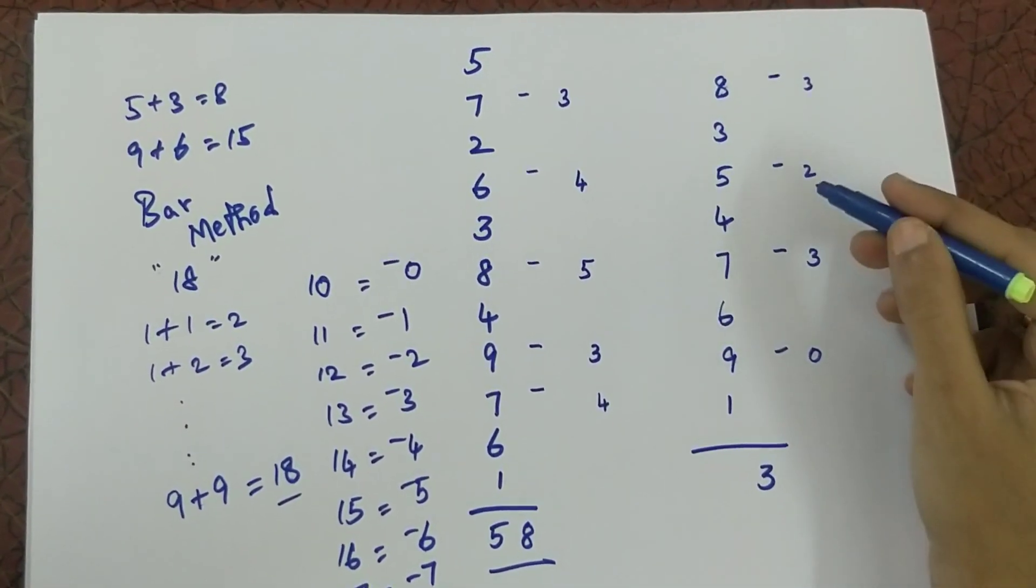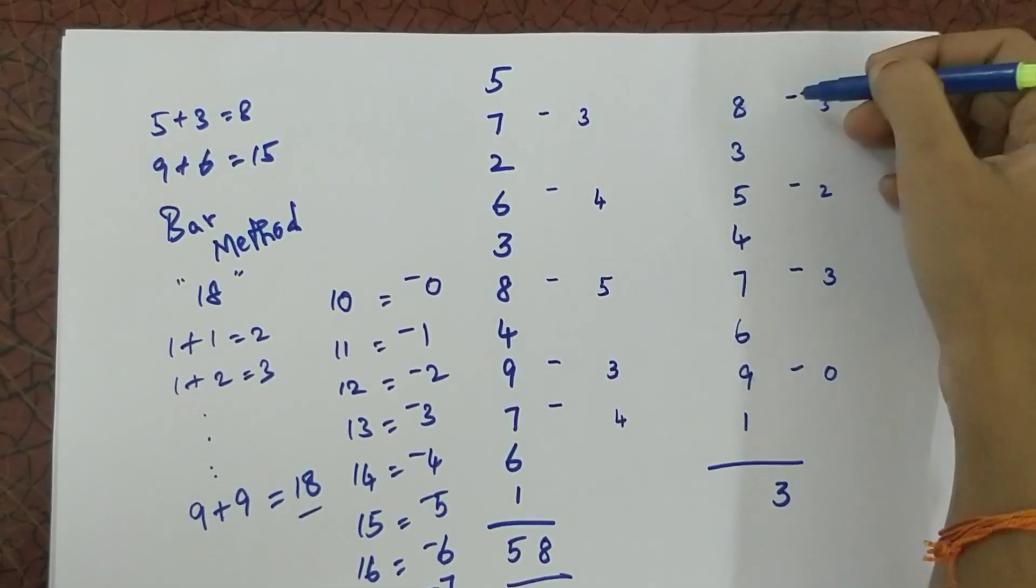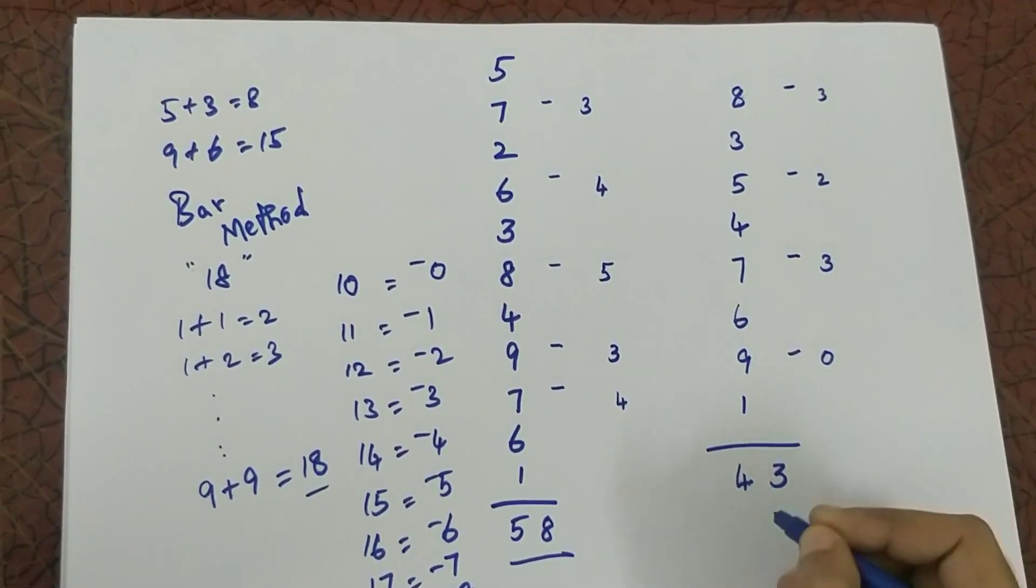Now I am going to count the number of bars here. 1, 2, 3 and 4. So my answer is 43.